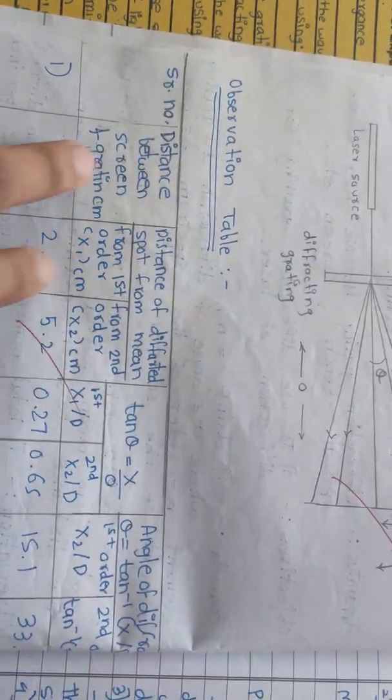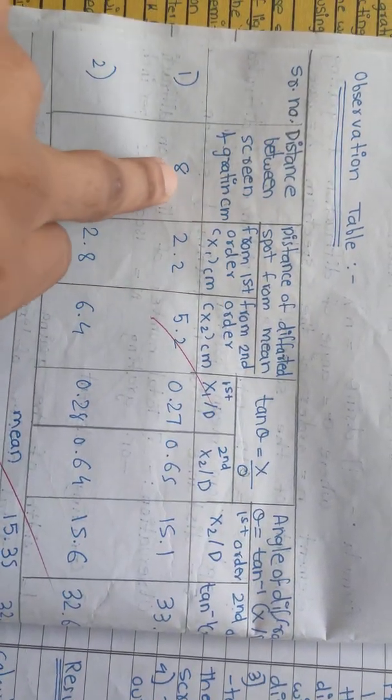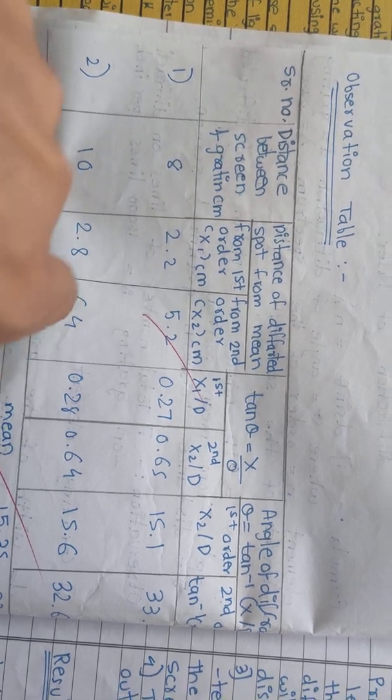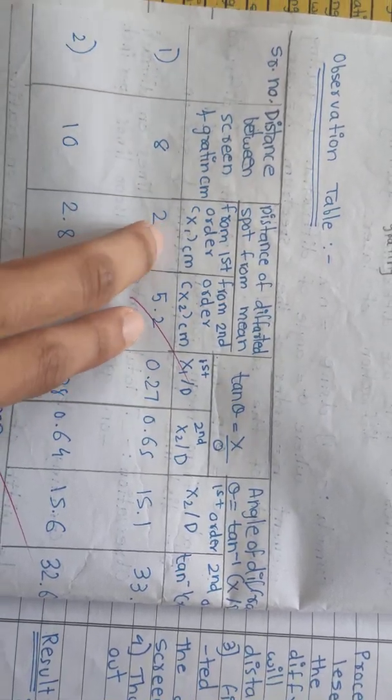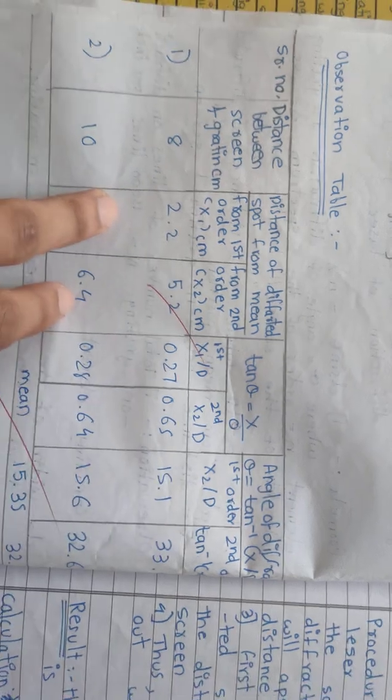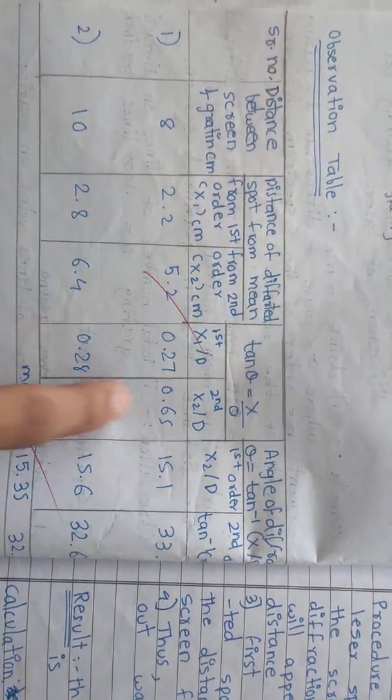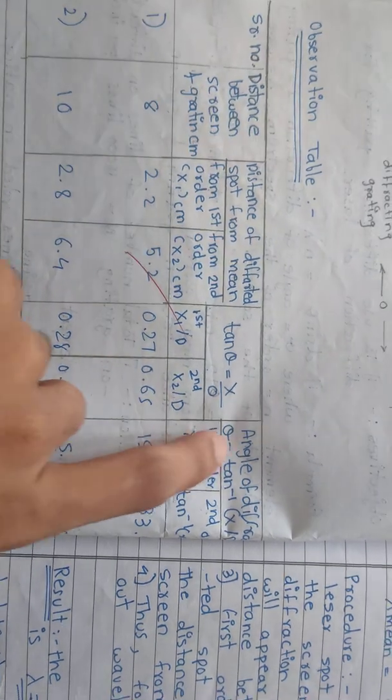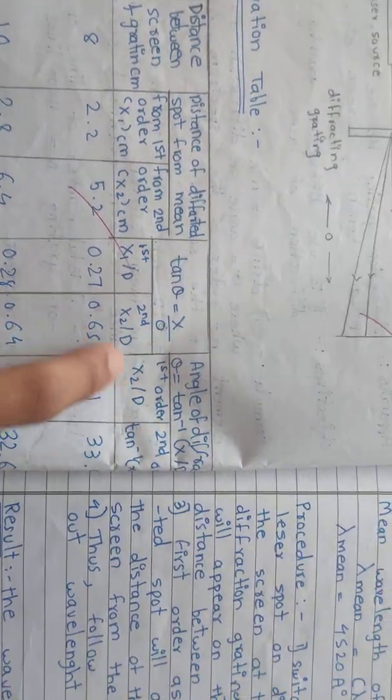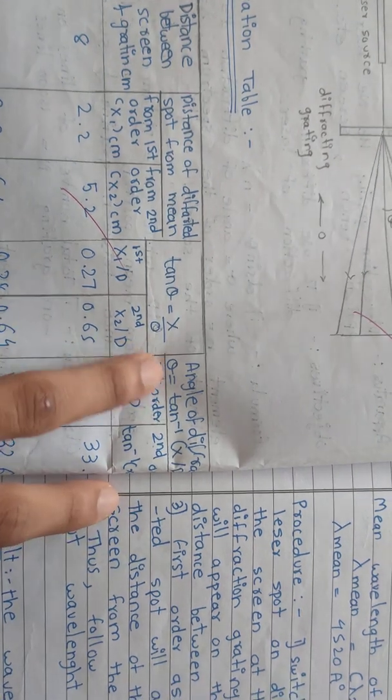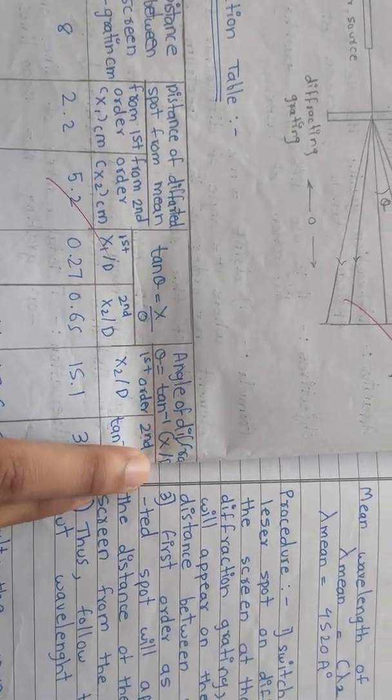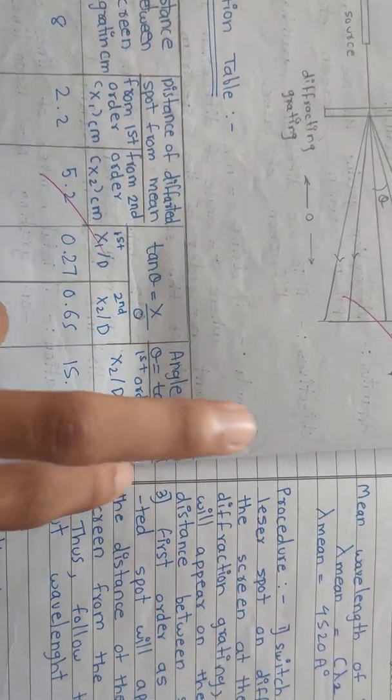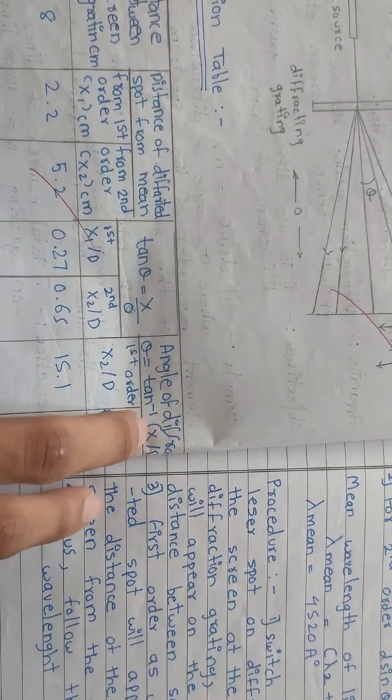Now I am going to calculate. We have to set some distances. We have taken two distances: 8 centimeters and 10 centimeters from the screen. This is x1, x2 you have to get. The formula is tan theta equals x1 over D. In this we have to put x.